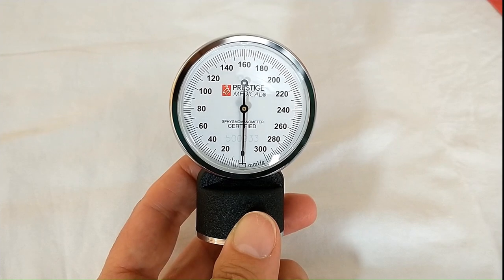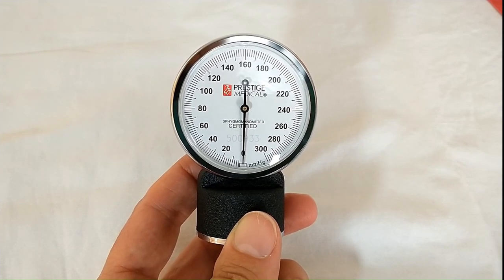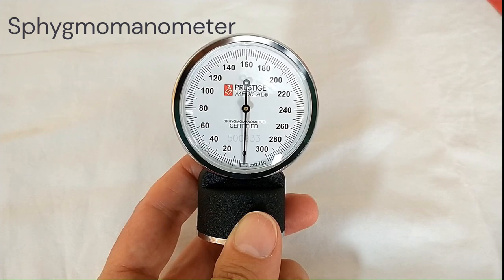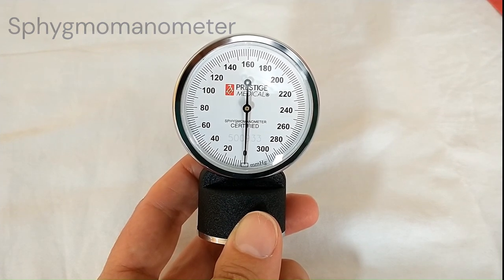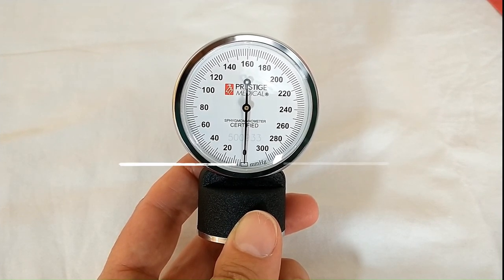The other part of the blood pressure cuff is the actual sphygmomanometer, so the actual device that will give us the reading. As you can see here, it goes from zero all the way to 300.